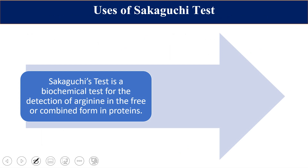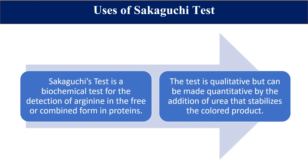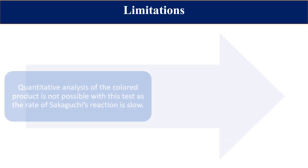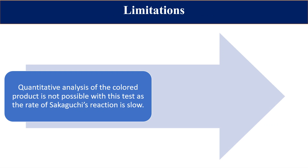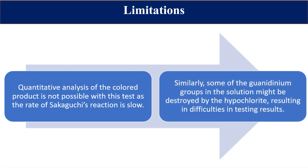The uses of this test: the Sakaguchi test is a biochemical test for the detection of arginine in free or combined (protein) forms. It is primarily a qualitative test, but it can be made quantitative by addition of urea, which stabilizes the color product. Limitations include: quantitative analysis is not accurate because the reaction is slow, and some guanidine groups in solution may be destroyed by the hypobromite, making complete quantification difficult.